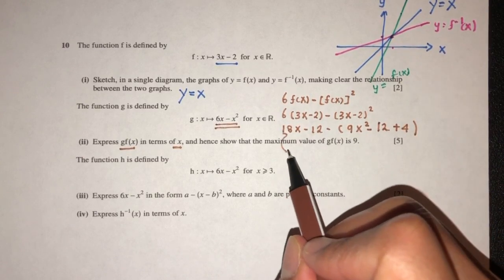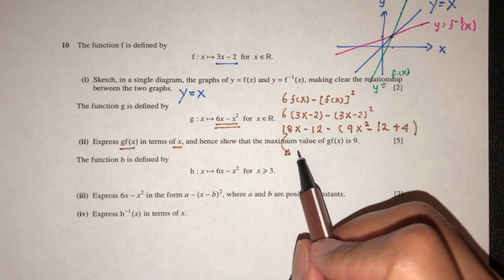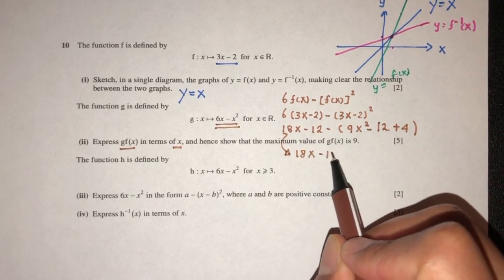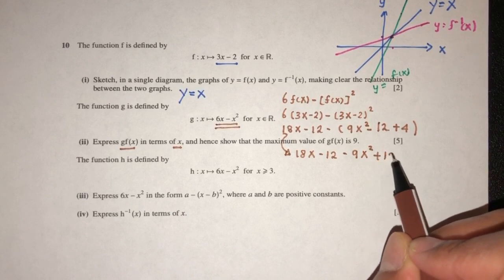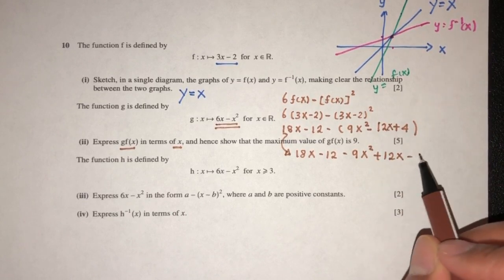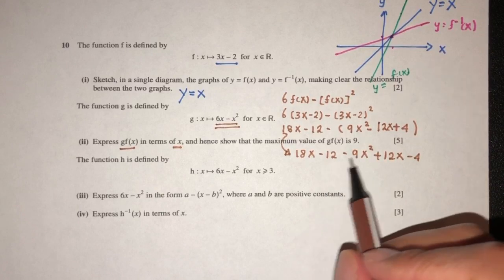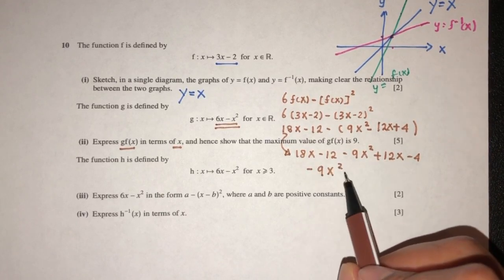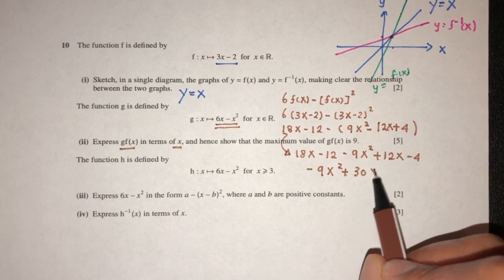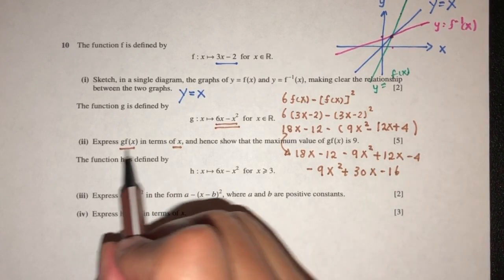So simplify: 18x minus 12, minus 9x^2, plus 12x, and minus 4. Let's see what you have. You will have minus 9x^2, 18 plus 12 will be 30x, minus 16. That will be this one.